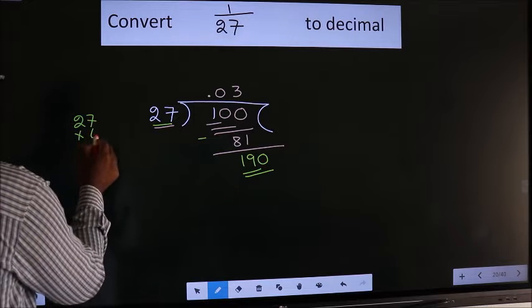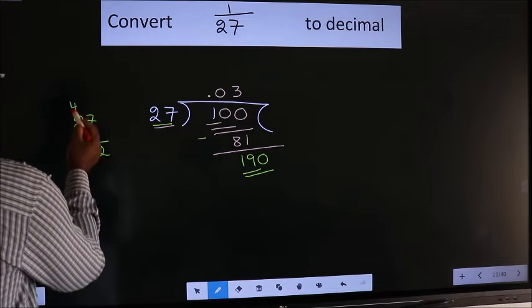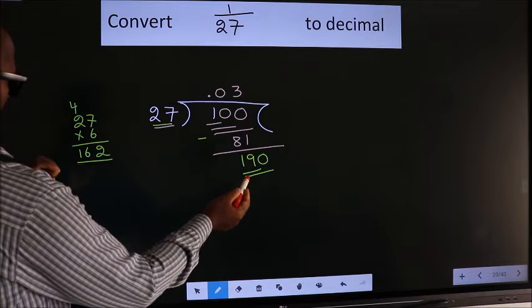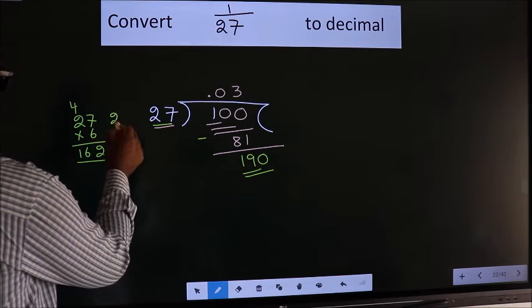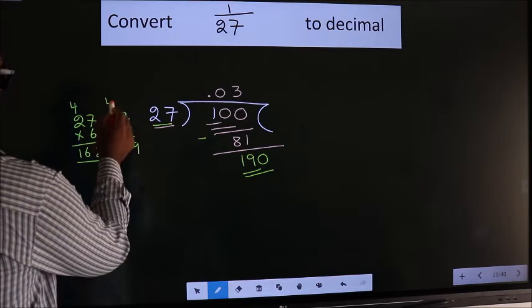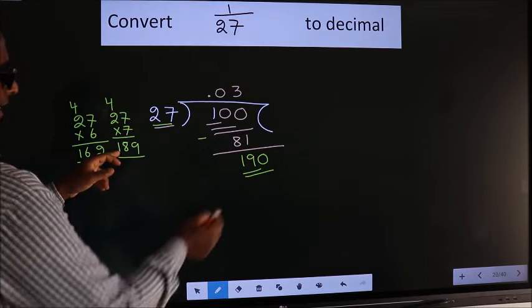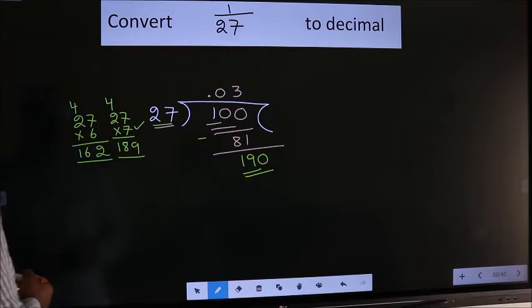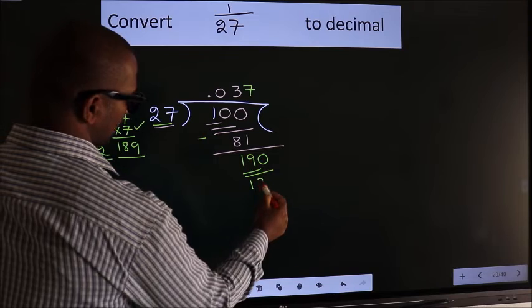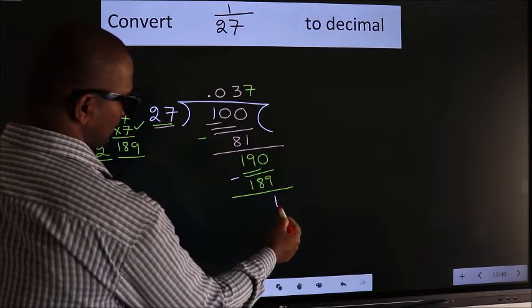27 into 6: 6×7 is 42, carry 4; 6×2 is 12 plus 4, 16. That's 162. What if we take 7? 7×7 is 49, carry 4; 7×2 is 14 plus 4, 18. Yes, 189 is close to 190. So we take 7. 27×7 is 189. Now we should subtract. We get 1.